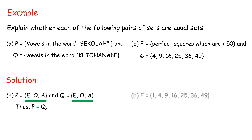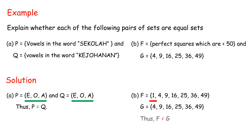B: F = {perfect squares which are less than 50} and G = {4, 9, 16, 25, 36, 49}. F = {1, 4, 9, 16, 25, 36, 49}. G = {4, 9, 16, 25, 36, 49}. The element 1 is in F but not in G. Thus, F is not equal to G.